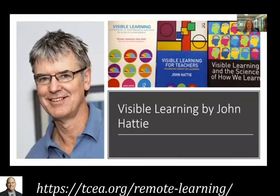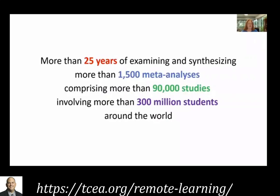John Hattie is a researcher who has written a number of books, starting with Visible Learning, where he talks about everything we do in education. Over the past 25 years he has looked at more than 1,500 meta-analyses with more than 90,000 educational studies involving more than 300 million students from around the world. So his research is valid — it has a very large base, it's over time, and it includes so many different studies. What he was trying to determine was what makes the biggest difference in accelerating student learning.